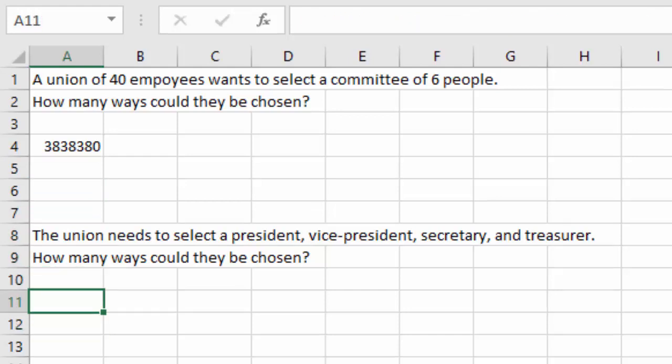Now, if the union wants to actually elect a president, vice president, secretary, and treasurer, now the order matters because the first one's going to be the president. The second one's the vice president. There's a difference if we change the order. Now we're talking about a permutation.